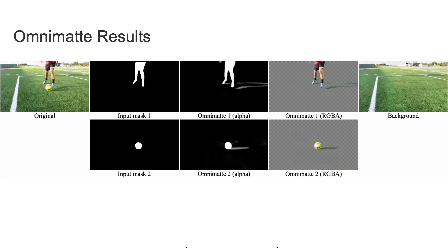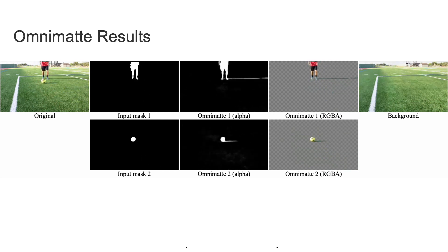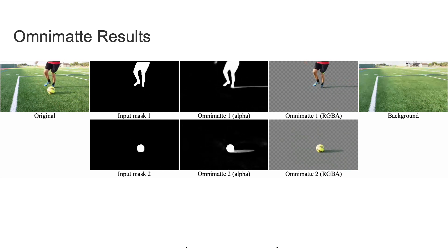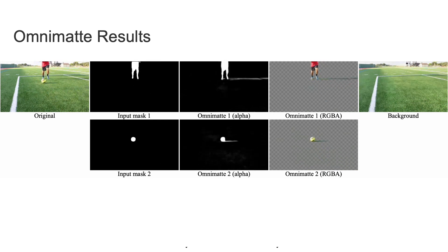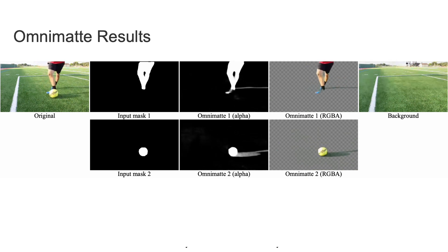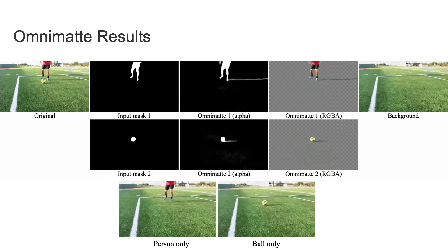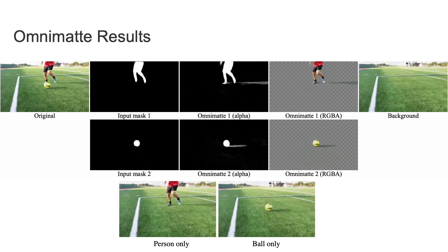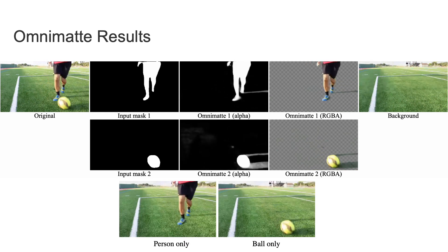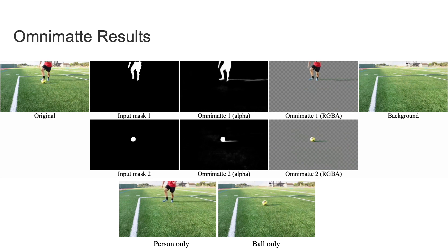In this two-layer example, our model largely manages to separate the shadow of the soccer ball from the shadow of the person. Here we show renderings of the video with each omnimat layer individually.